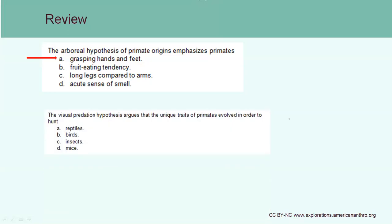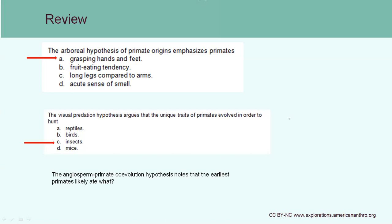Next question: The visual predation hypothesis argues that the unique traits of primates evolved in order to hunt what? A, reptiles; B, birds; C, insects; or D, mice. In the case of this early primate, we think it evolved to potentially eat insects. Finally, the angiosperm primate co-evolution hypothesis notes that the earliest primates likely ate fruit, since angiosperm refers to a type of plant that has flowers used to attract pollinators and produce fruit.